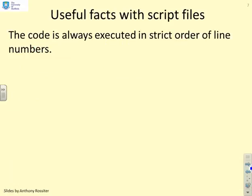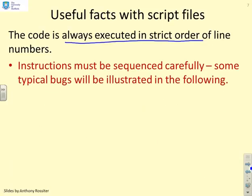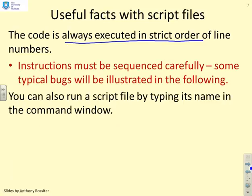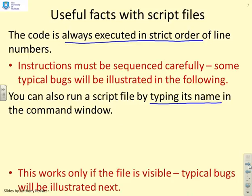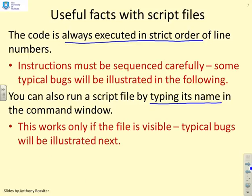Some useful facts about script files: code is always executed in strict order of line numbers, so you must carefully sequence your instructions. We'll illustrate a typical bug that happens when you haven't sequenced your code correctly. You can also run a script file simply by typing its name in the command window — in the long term that's actually very useful and the most common way of running files. However, this works only if the file is visible, and we'll illustrate what we mean by visible.